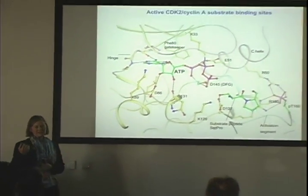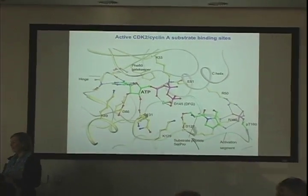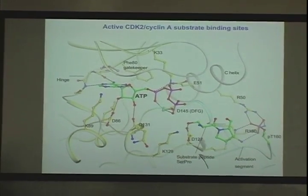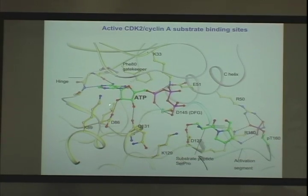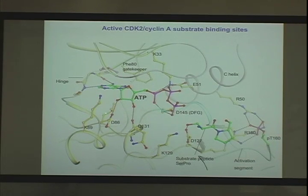Susan's done a great job in scene setting, and I'd just like to begin with this scene-setting slide for what's going to come later, describing the ATP recognition site in the active form of CDK2-Cyclin-A. This will be familiar to most people. We know that the ATP is recognized through two hydrogen bonds from the hinge region, the hydrophobic character of this cleft, and the ribose accommodated in this pocket making two hydrogen bonds.